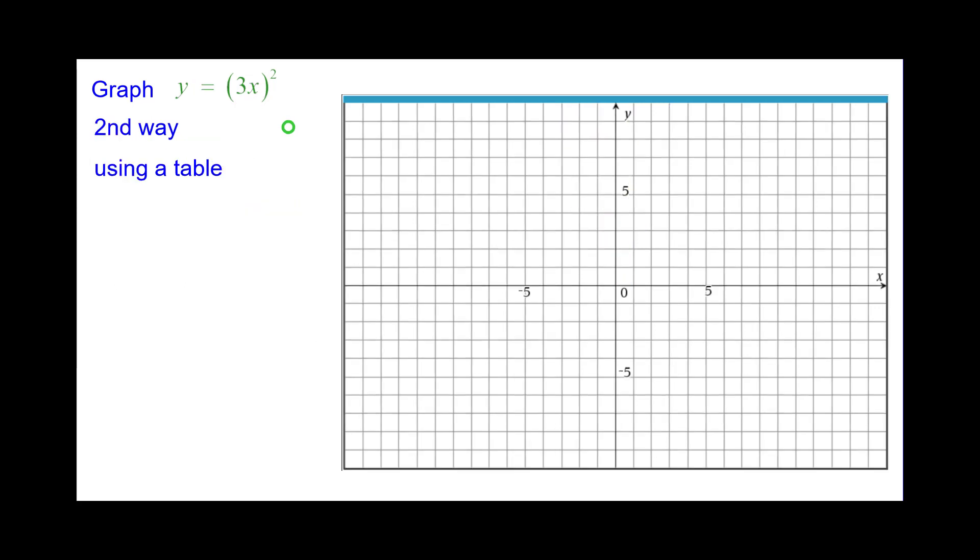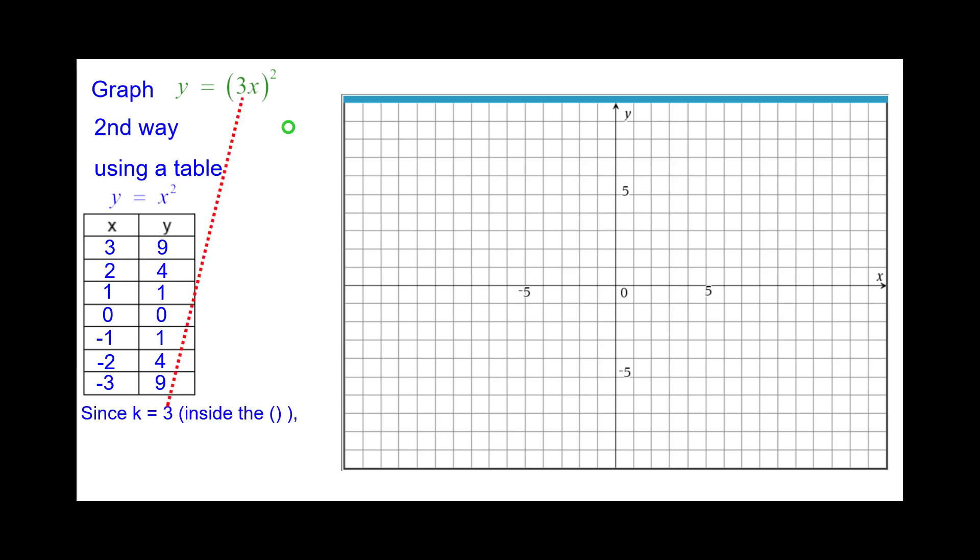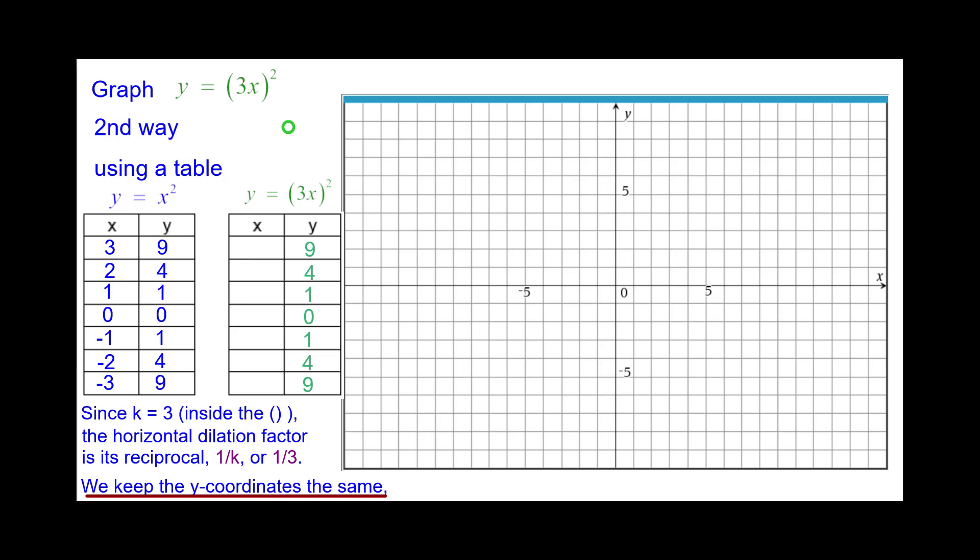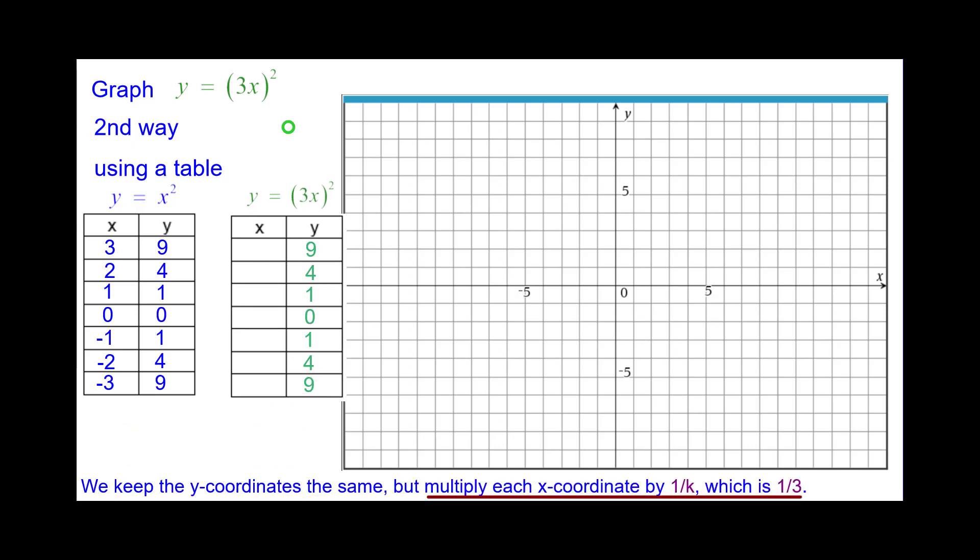Second way using a table. Here's our normal y equals x squared table. Since k equals 3 inside the parentheses before we square it, the horizontal dilation factor is the reciprocal of 3 which is 1 third. We keep the y-coordinates the same. So we'll do that in that table. But multiply each x-coordinate by the reciprocal of k which is 1 third.